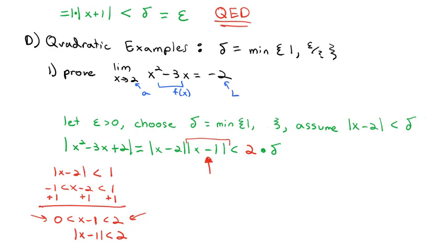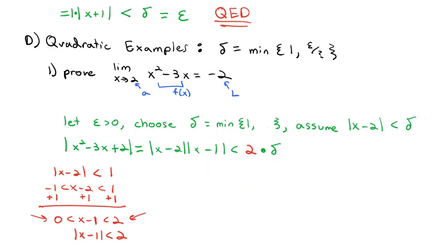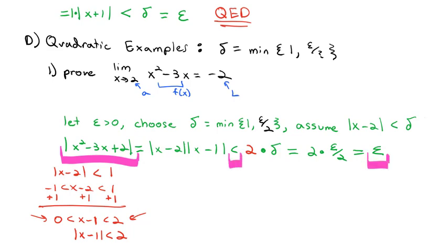That worst-case bound of 2 is what we multiply delta by. So the absolute value of x minus 2 times x minus 1 is less than 2 times delta. Now we know delta should be epsilon over 2 — the reciprocal of 2, because it's multiplied by delta. We have 2 times delta equals 2 times epsilon over 2; the 2s divide out, leaving just epsilon. We've shown that f of x minus L is less than epsilon, so we're done.